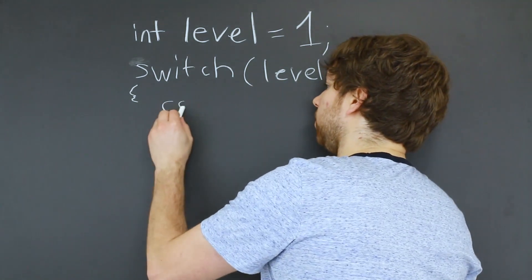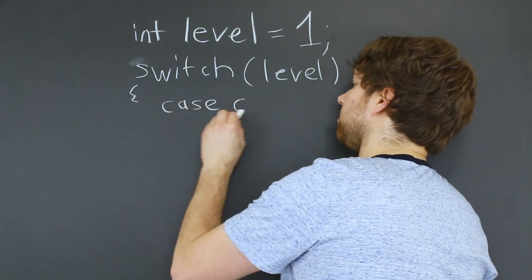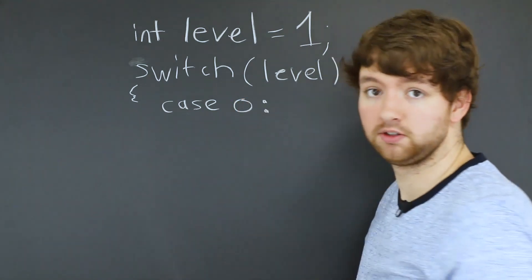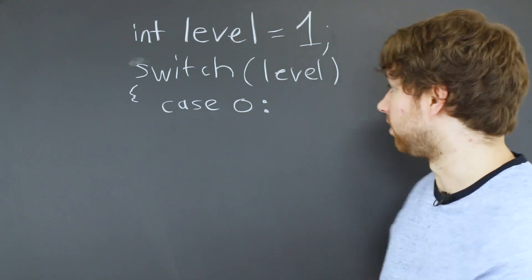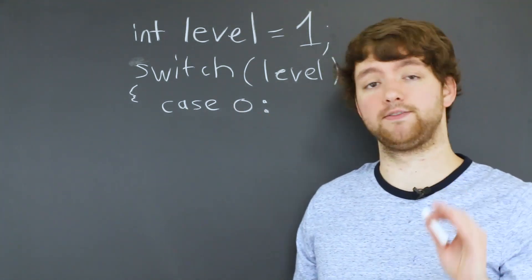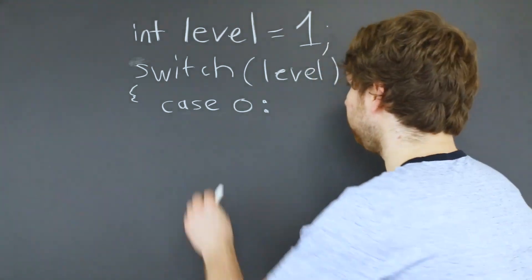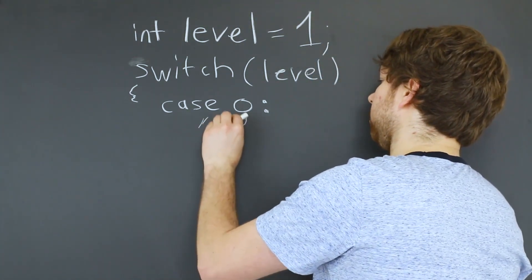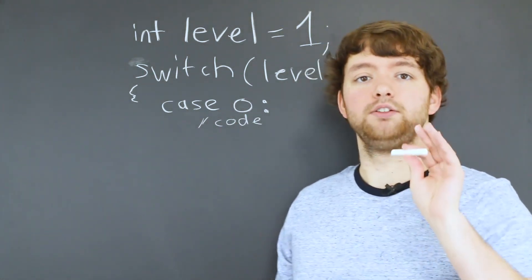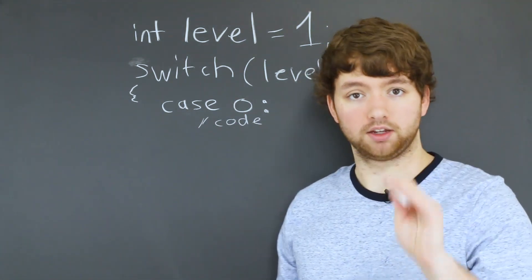So for example, we might have case zero. And then we put a colon, not a semicolon. And then after the case zero, we can put the code of what happens if the value is zero. I'm just going to put a comment code. And then at the end of the case, you use what's known as the break keyword.